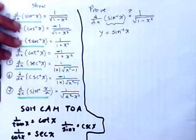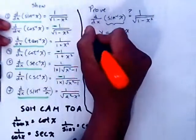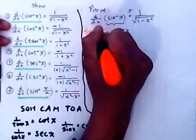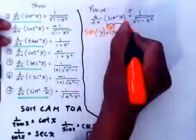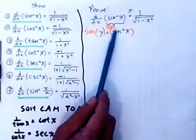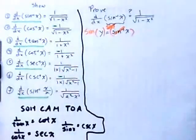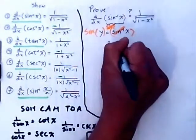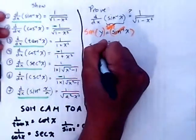Next, we're going to take the sine of the left side and the sine of the right side. The reason is because the sine and the sine inverse cancel out — they're inverse functions. On the right-hand side of the equation, you have x. On the left-hand side, you have sine of y.